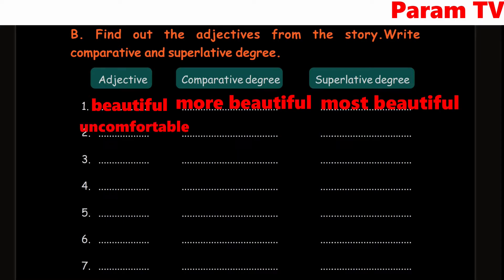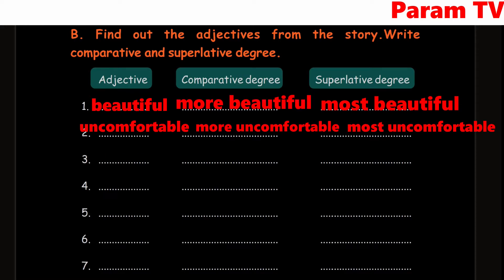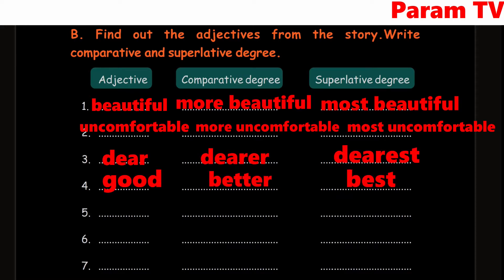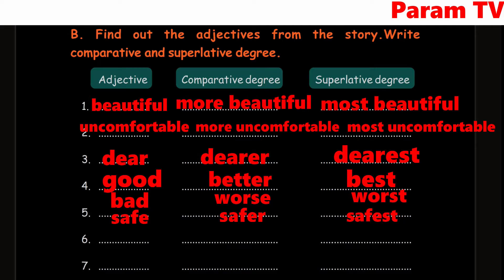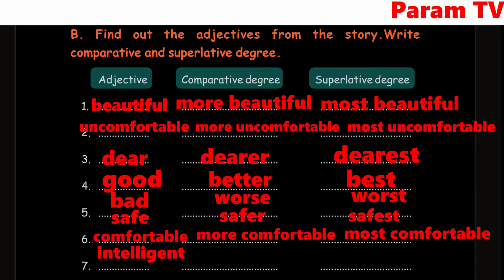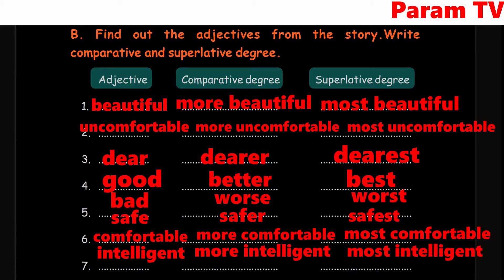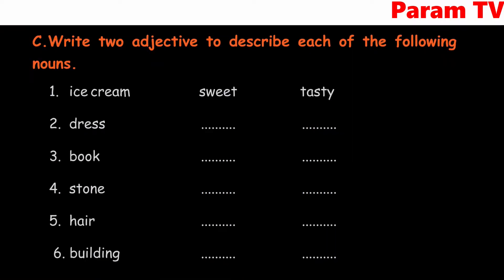Let's start: beautiful, more beautiful, most beautiful. Uncomfortable, more uncomfortable, most uncomfortable. Dear, dearer, dearest. Good, better, best. Bad, worse, worst. Safe, safer, safest. Comfortable, more comfortable, most comfortable. Intelligent, more intelligent, most intelligent. Wise, wiser, wisest.